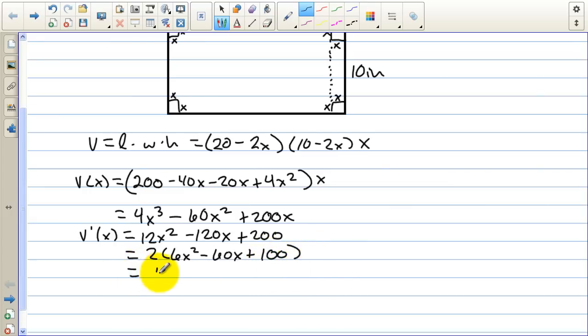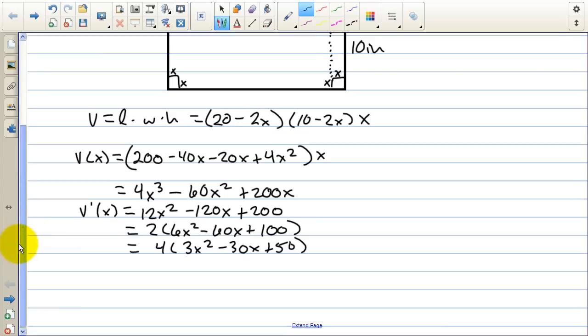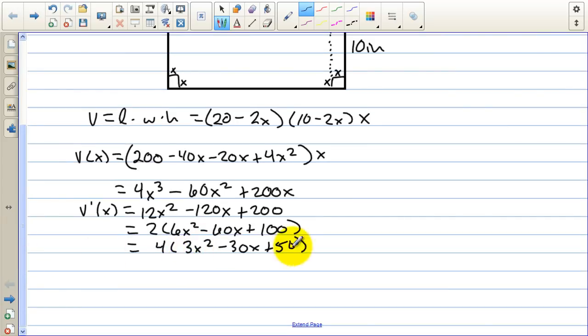Another 2. 3x squared minus 30x plus 50. And that's as basic as we can get it. And well, we're going to use the quadratic formula to solve this. So we get values of x equals 7.887 and x equals 2.113.